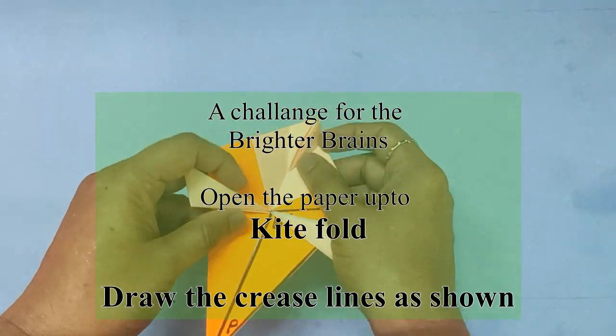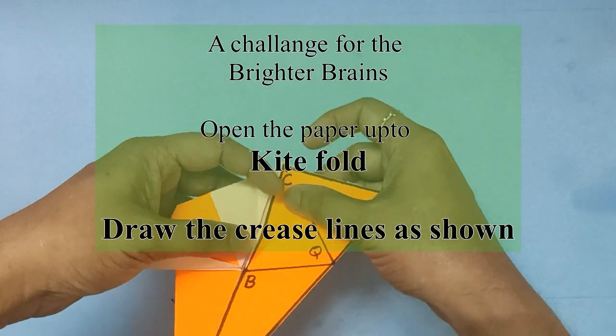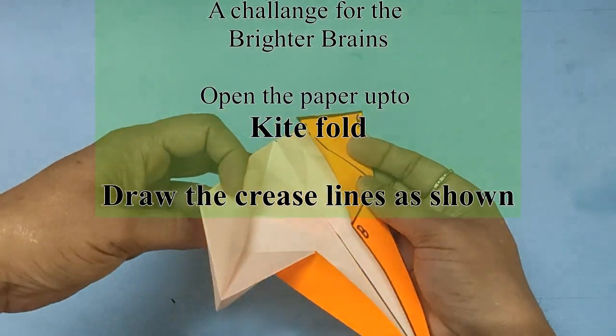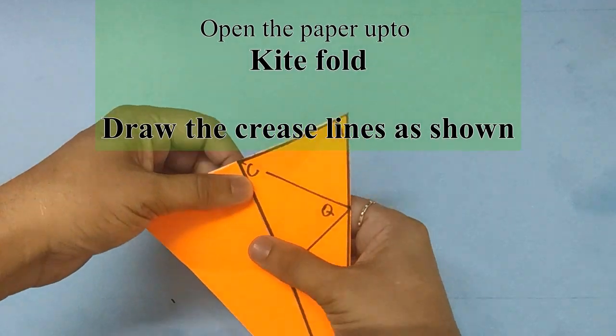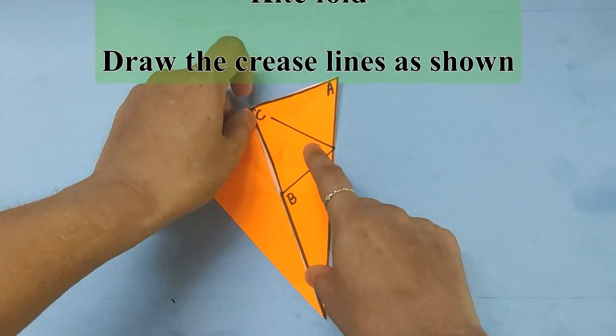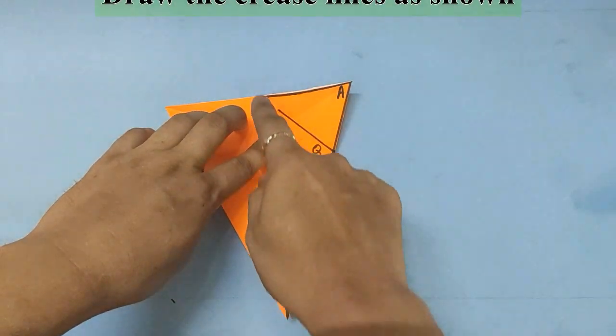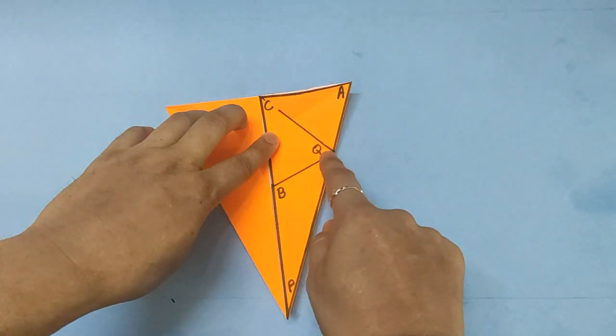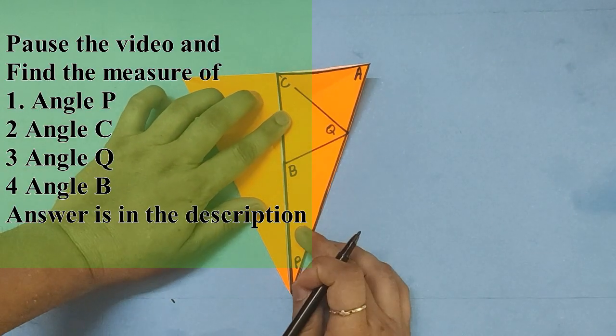Then you will draw the trace lines as shown. You will name the points A, B, C, and B and Q.